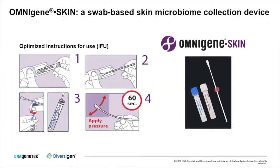We developed Omnigene Skin, a swab-based skin microbiome collection device. It's a very simple device consisting of a flock swab with a breakpoint, an Omnigene collection tube containing one milliliter of stabilization buffer, and a wetting solution used to moisten the swab prior to collection. Also included are our optimized instructions for use. We spent a lot of time developing those IFUs to ensure the end user collecting the sample at home would do as good a job as possible. The steps are simple: take out the tube and swab, dunk the swab in the wetting solution, then collect from the site of interest for 60 seconds while applying significant pressure to capture as many microbial cells as possible.